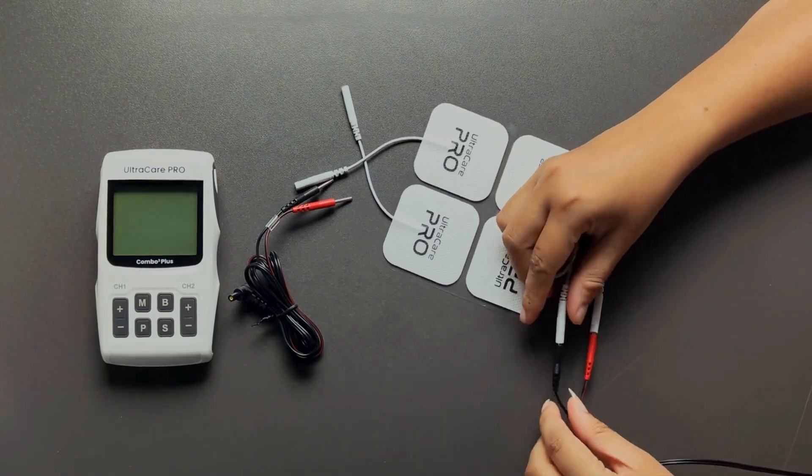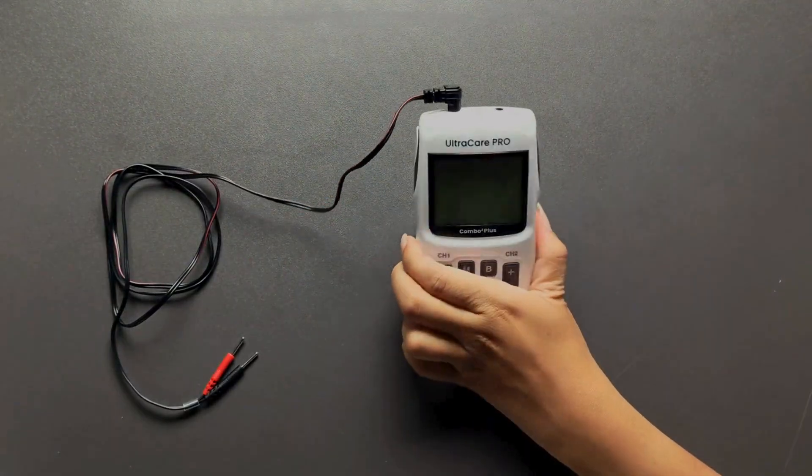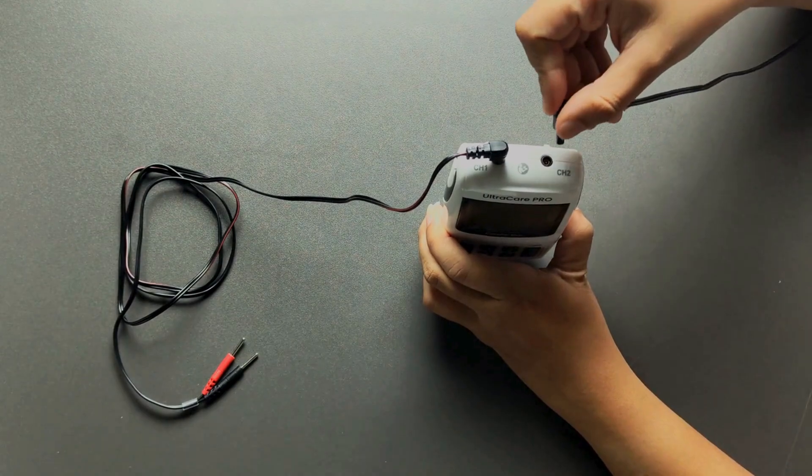First, connect the pads and the lead wires. Insert the lead wires into the electrodes and then plug them into the combo unit.